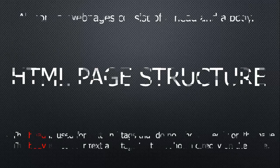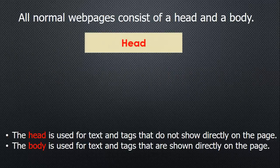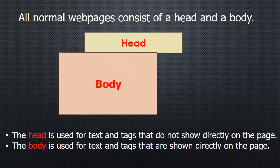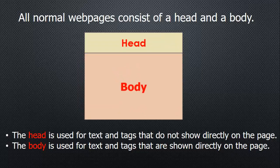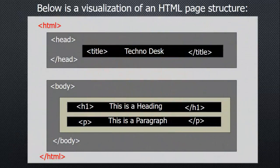Now we are going to discuss HTML page structure. Normally an HTML page consists of head and body. The upper section is called head and after head, the lower section is called body. The head is used for text and content that does not show directly on the page, but the body is used for tags and text that show directly on the page. This is the visualization of the HTML page structure — the opening HTML tag is the start tag and the closing HTML tag is the end tag.